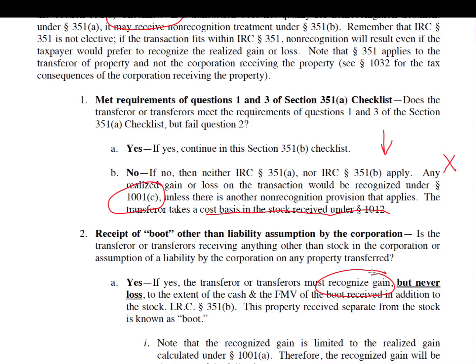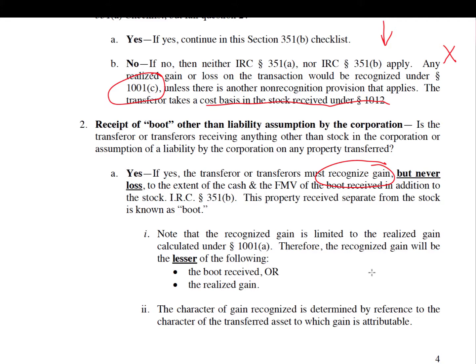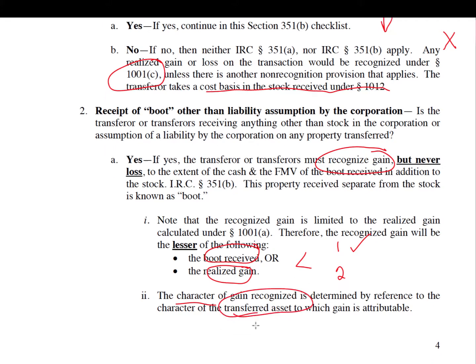If there is boot, the rule is the amount of gain that must be recognized is the lesser of the amount of boot received or the realized gain on the transaction. You compare them and pick whichever is lesser — looking at the fair market value of the boot or the amount of cash received and comparing that with the realized gain. The character of the gain will be the same as if the shareholder sold the respective property being transferred — it references the character of the asset transferred.